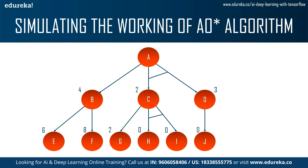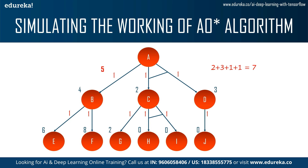We also need to consider edge values — the cost of going from one node to another. For simplicity, let us consider all edge values as 1. Starting from A, the cost to go to B is 4 + 1 = 5. The cost of going via C and D is 2 + 3 + 1 + 1 = 7. The AO star algorithm compares these costs: 5 versus 7. Since 5 is lower, the algorithm starts exploring the path through B.